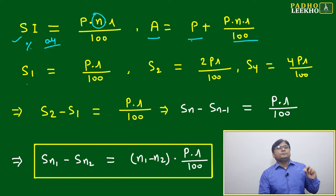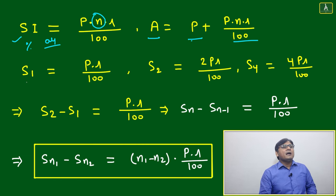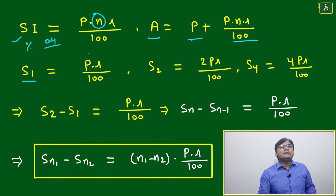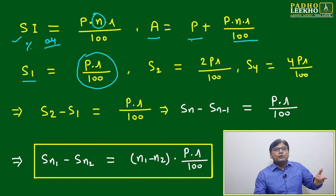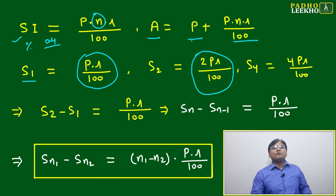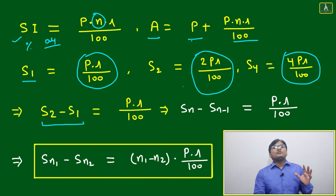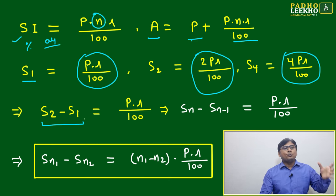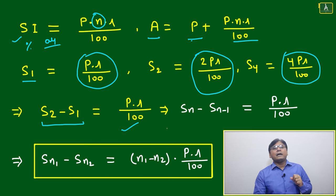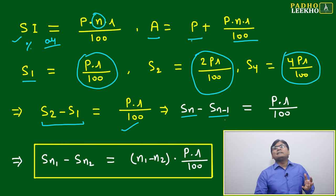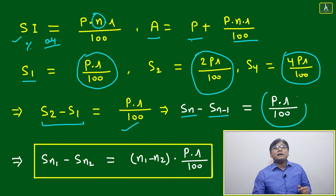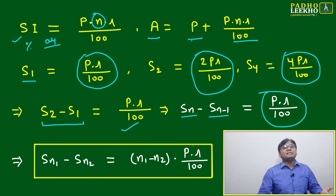Now looking at it year by year: after one year, interest S1 = PR/100; after two years, S2 = 2×PR/100; after four years, S4 = 4×PR/100. If we take the consecutive difference — say S2 minus S1 — we get PR/100. In general, interest in N years minus interest in (N−1) years always equals PR/100 for any two consecutive years.